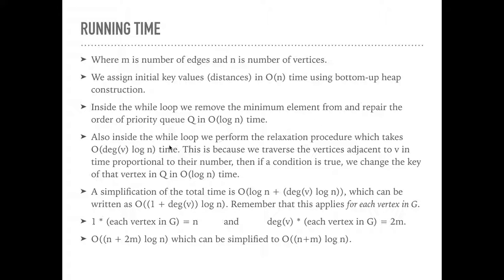And then also inside the while loop, we perform the relaxation procedure, which takes O(degree v log n) time. So that's because we traverse the vertices adjacent to v in time proportional to their number. So we're at a vertex, we check out all its neighbors, that's degree v. Where degree is the number of incident edges on the vertex, number of edges coming into it, leading to neighboring vertices.